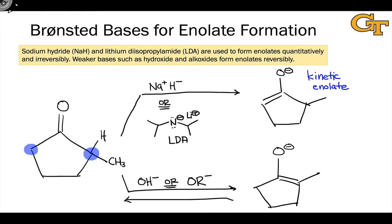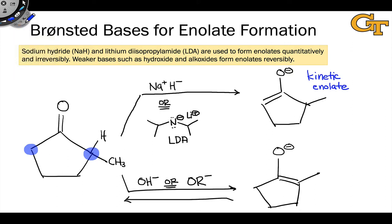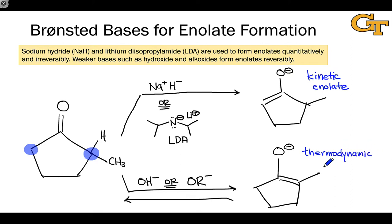Enolates prefer to deprotonate water, not the reverse — hydroxide deprotonating a ketone is less favorable than an enolate deprotonating water. Because this reaction is reversible and generated under equilibrium conditions, this is called the thermodynamic enolate. It's the more stable of the two because it involves a more substituted carbon-carbon double bond, and it is generated selectively in the presence of a base weaker than an enolate, most commonly hydroxide or alkoxides.